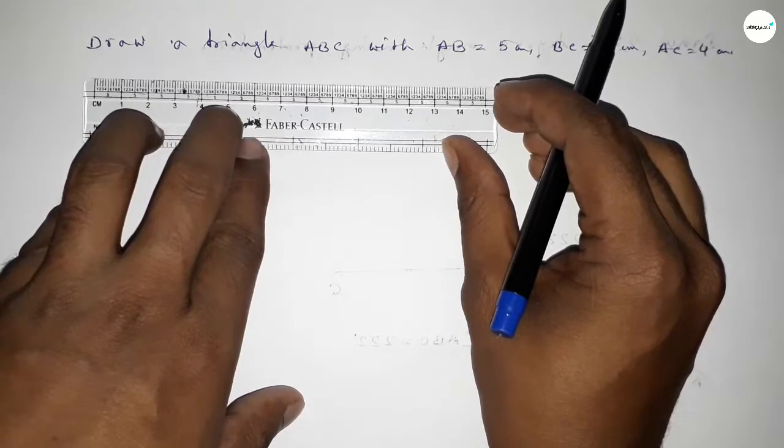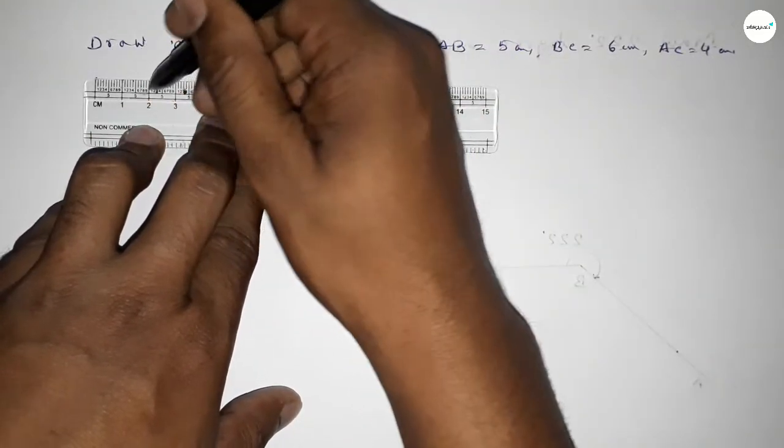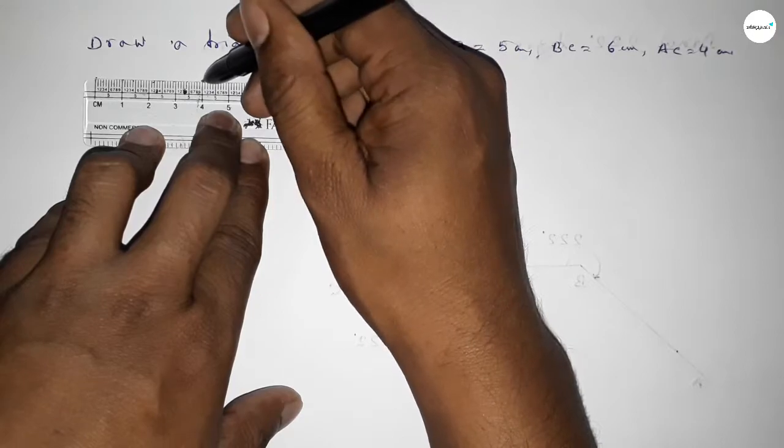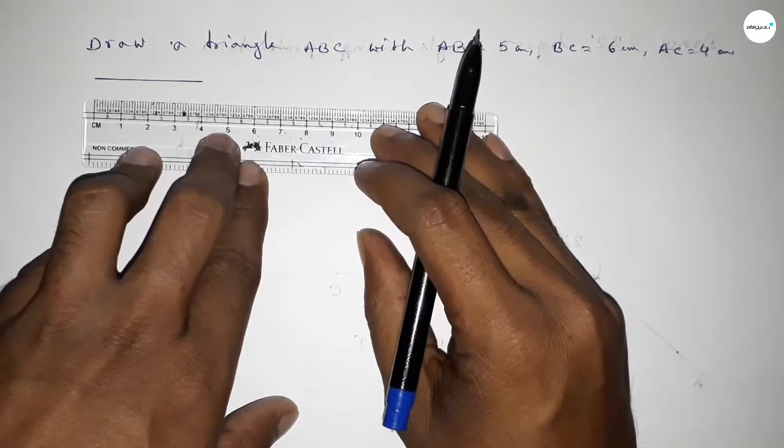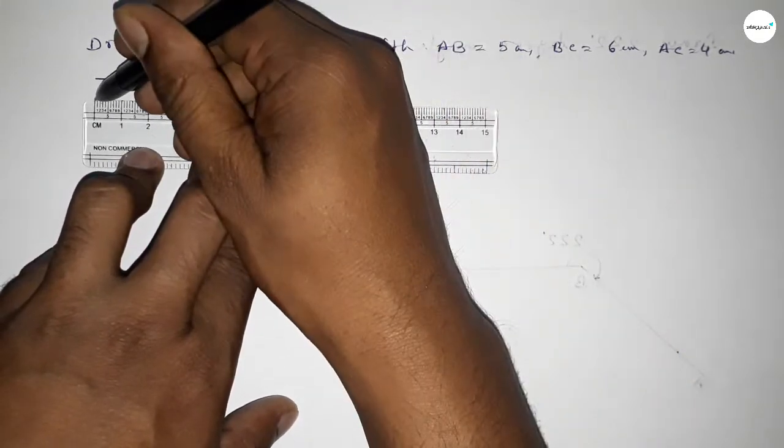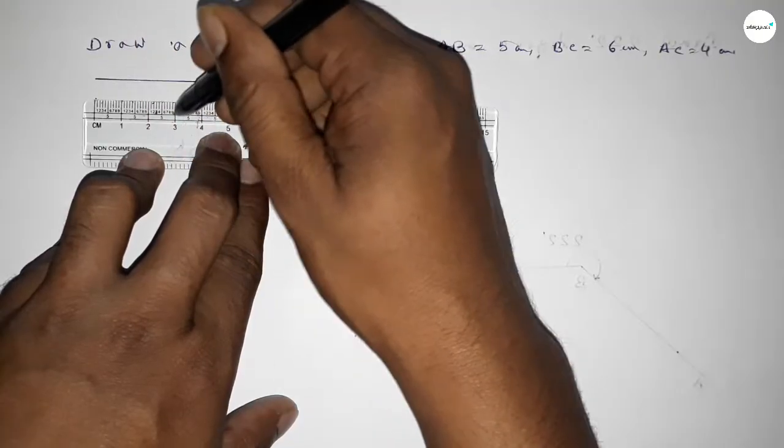First of all we have to draw here a line of length 4 centimeter. So this is starting 0, 1, 2, 3, 4, so first drawing here 4 centimeter. Then drawing a line of length 5 centimeter, so this is 5, so 5 centimeter.